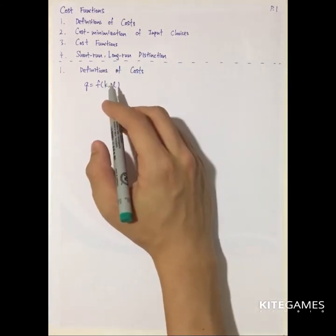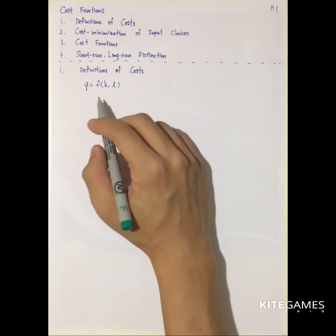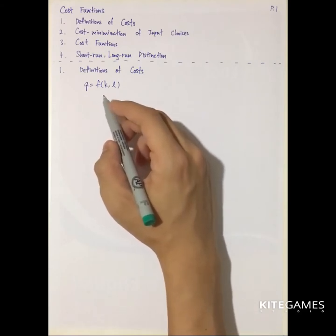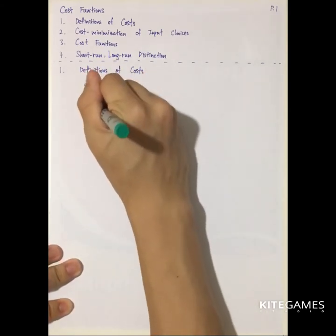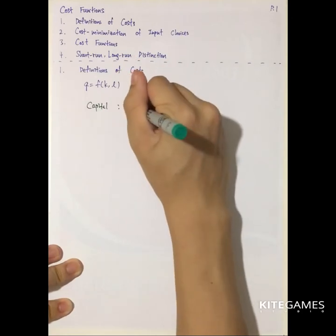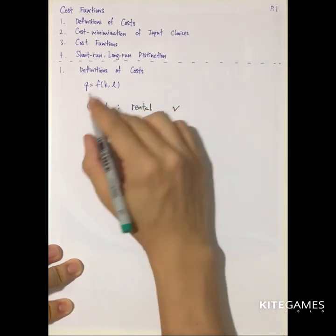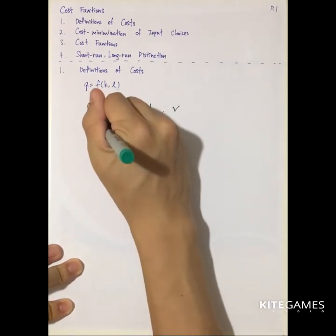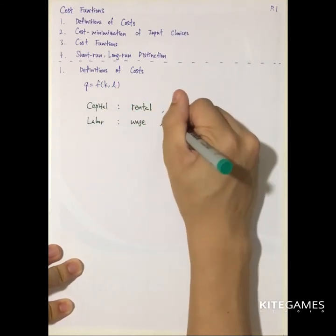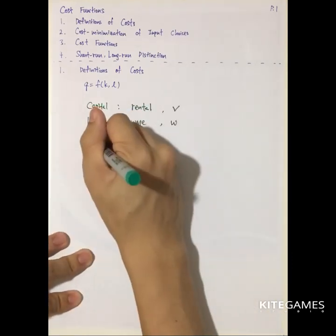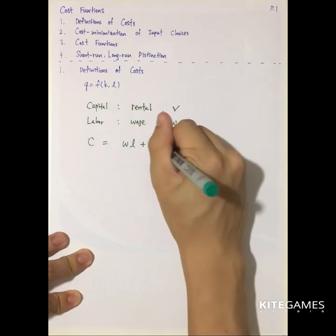First is the definition of cost. In economics we assume there are only two inputs: capital and labor. We investigate the cost associated with these two inputs. For capital, the cost is called rental, and we use the symbol V to represent the capital cost. For labor, the cost is the wage, and we use W as the symbol. Therefore, the total cost is equal to wage times the number of labor, plus V times the number of capital.